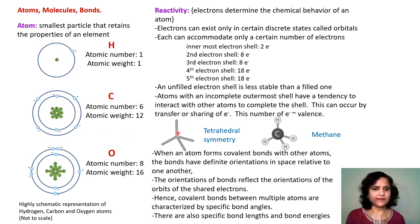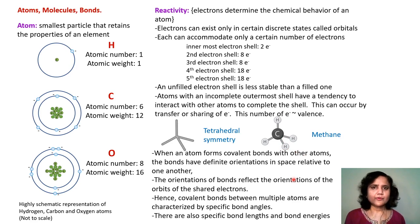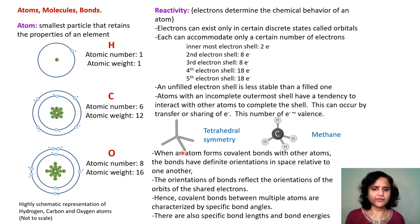A carbon atom can share four electrons and therefore it can form four bonds with other molecules, which have tetrahedral symmetry as shown here in the case of methane. When an atom forms covalent bonds with other atoms, these bonds have a defined orientation in space relative to one another, reflecting the orientations of the orbitals of the shared electrons. Covalent bonds between multiple atoms are characterized by specific bond angles, bond lengths and bond energies.